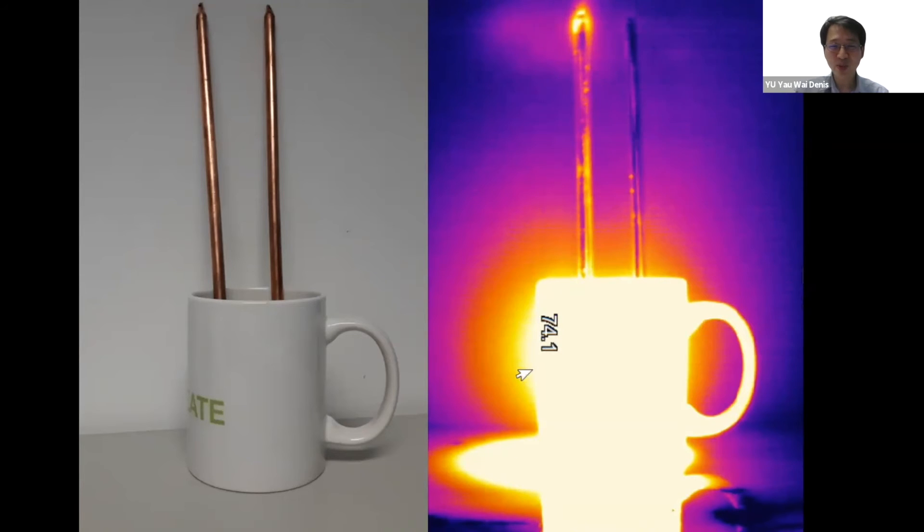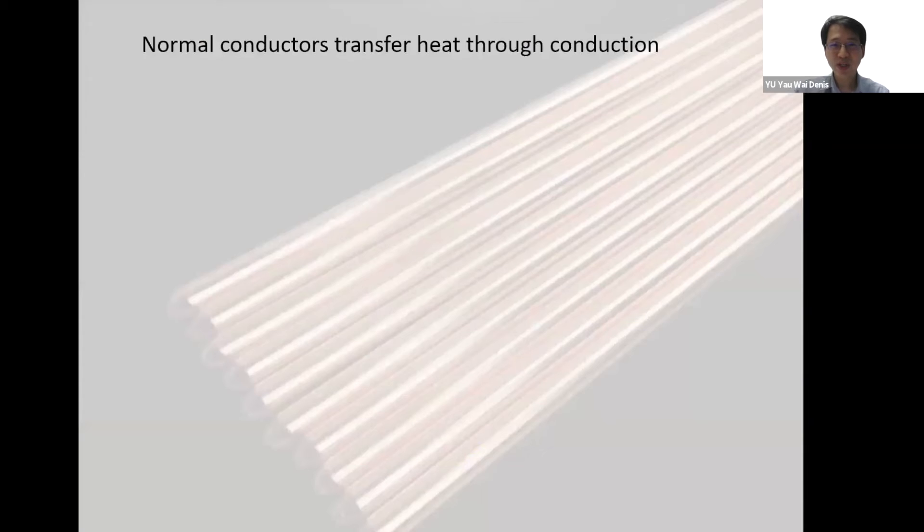In order to explain this we have to see how heat is being conducted. In the normal conductor heat is actually conducted through the solid, so the speed of conduction depends on the thermal conductivity of the solid.